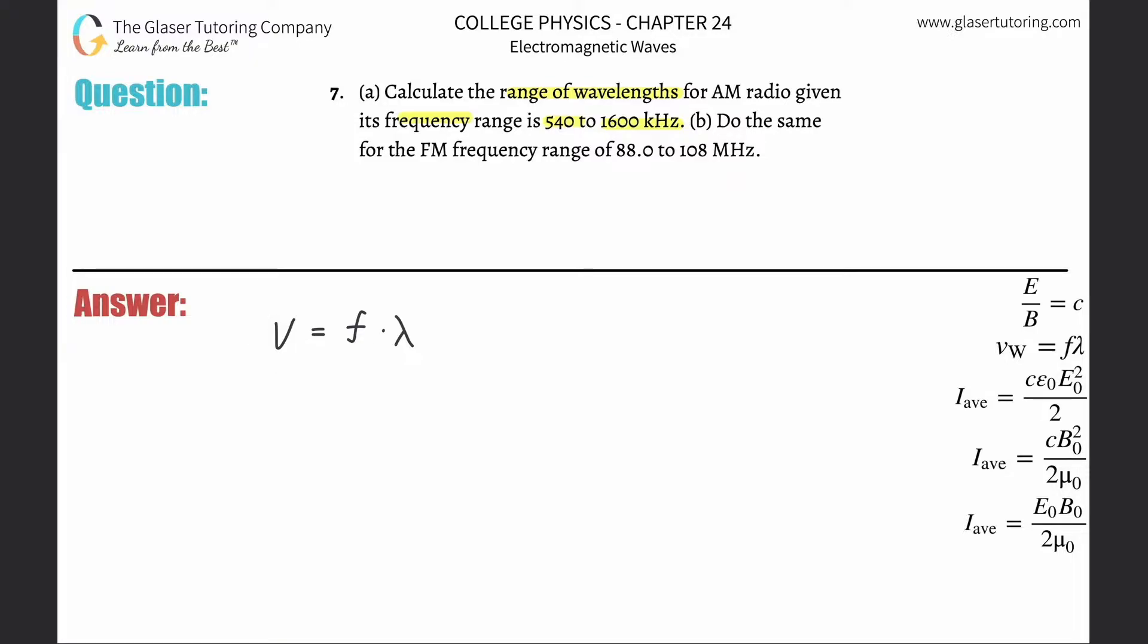Now the velocity here, if they don't tell you, we can basically assume that it is the speed of light. We have to assume that these waves are traveling in a vacuum. So in order to find the wavelength, simply divide out the frequency from both sides. The wavelength is a function of the velocity of the wave divided by its frequency.